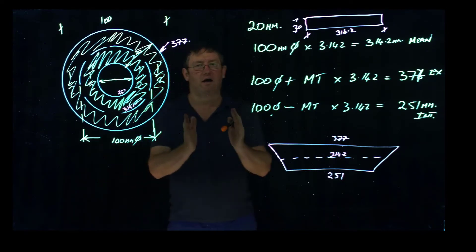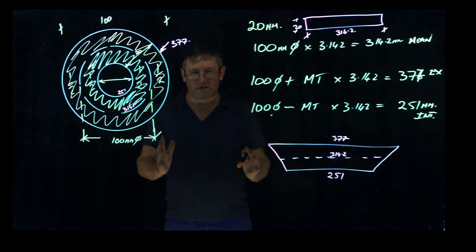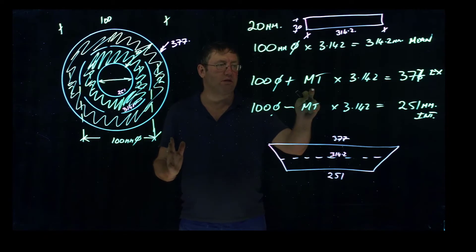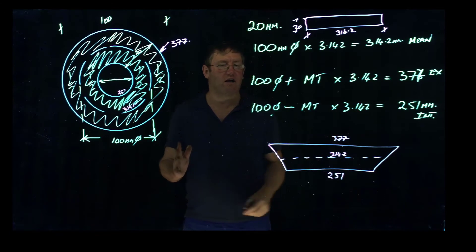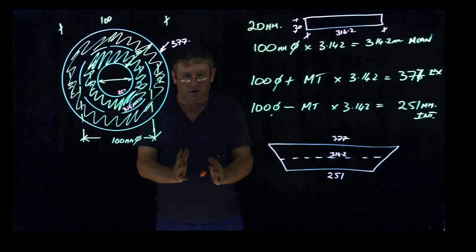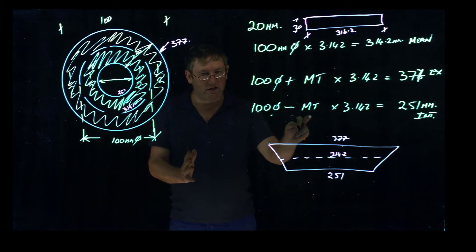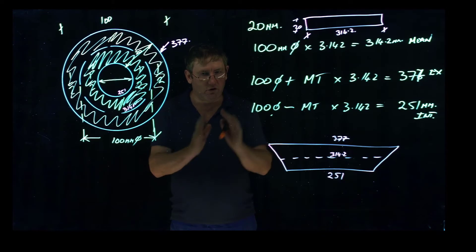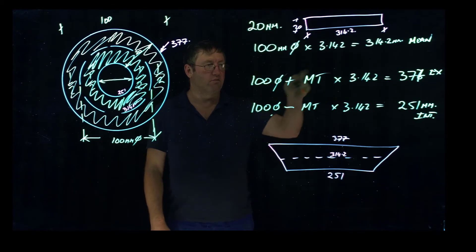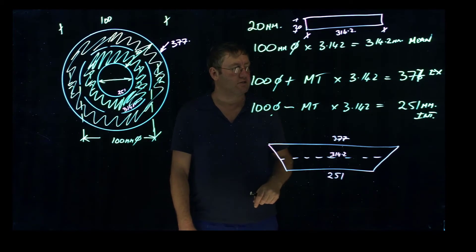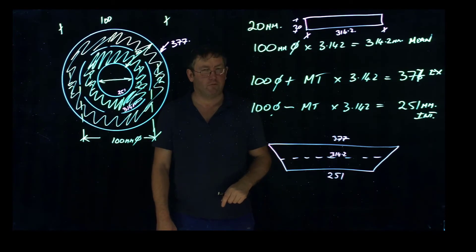So whenever you work out a dimension, if you want to go over something, you must add the material thickness to it before you times it by pi to get your cut length. If you want to go inside something, you must minus the material thickness. So whatever you're making, you need to determine whether you're going over it or inside it, and then you just plus or minus your material thickness to determine your cut size.